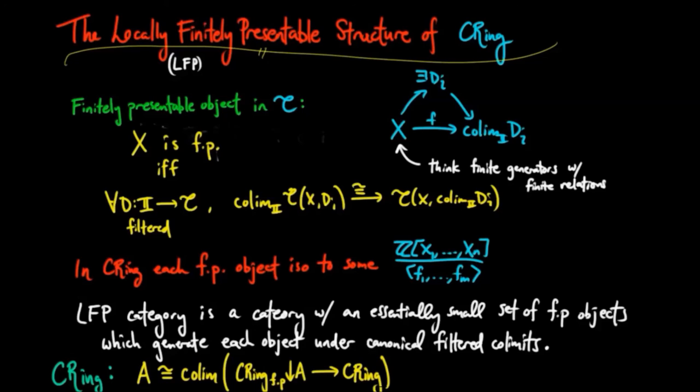If you take the co-limit of this, you'll regain those structural morphisms to A. Moreover, it's easy to verify that this category is essentially small and filtered.